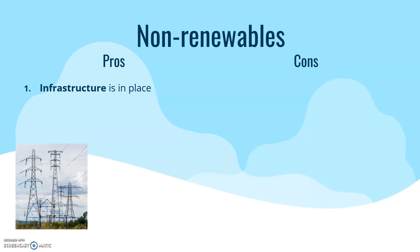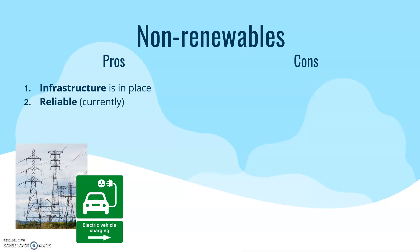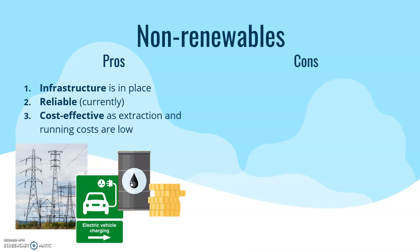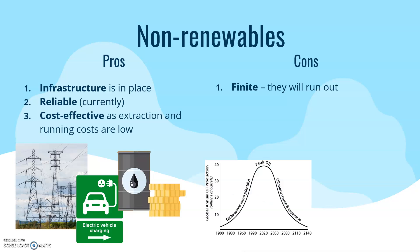The reason non-renewables are so prevalent is because the infrastructure is already in place — we've been burning them for many decades, even hundreds of years. The systems are in place to facilitate it. It's also currently reliable and cost-effective because extraction and running costs are low. However, they are finite and will run out, as this graph showing peak oil illustrates.